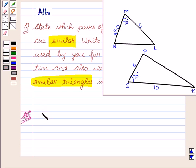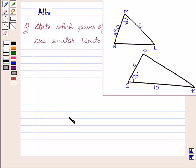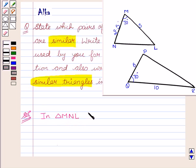In triangle MNL and triangle PQR we see that angle M is equal to angle Q, and both these angles are equal to 70 degrees.